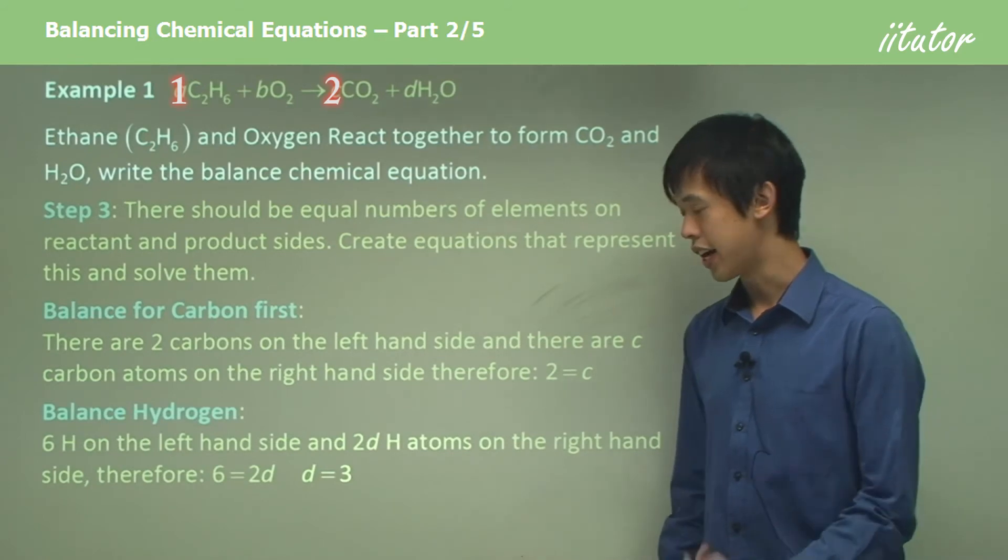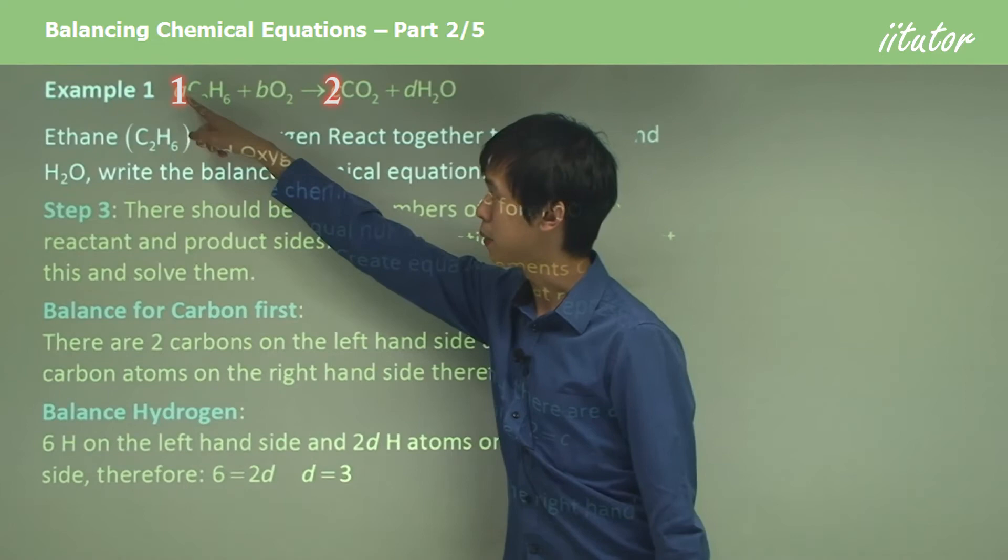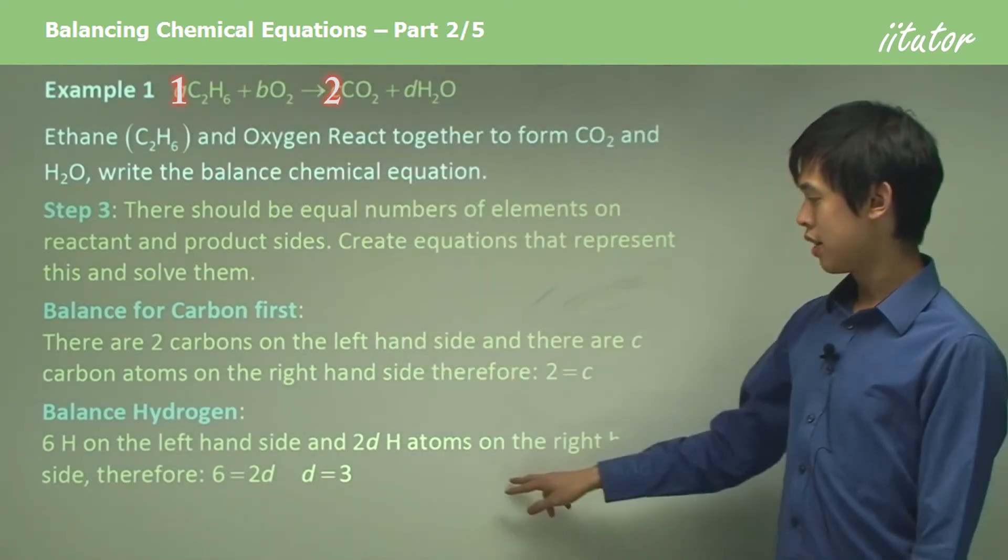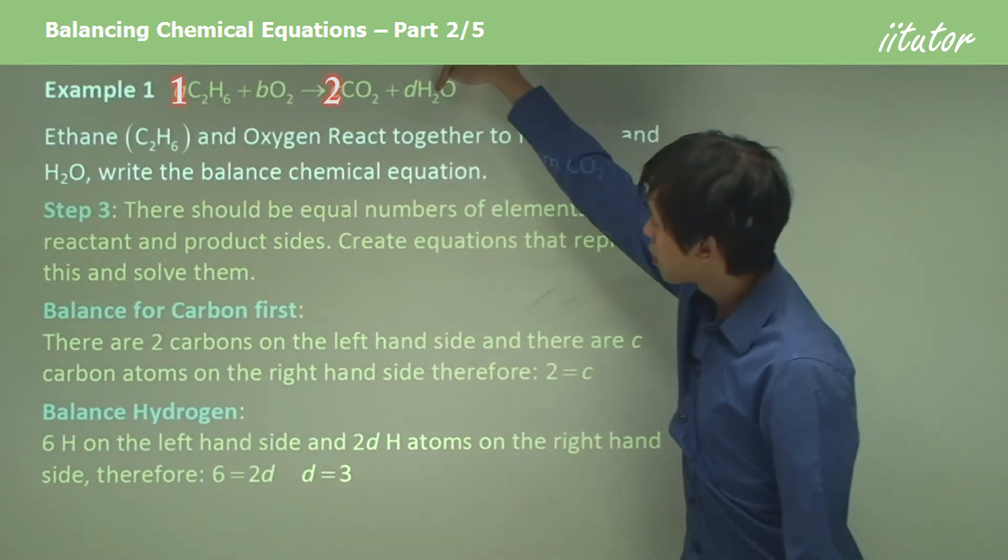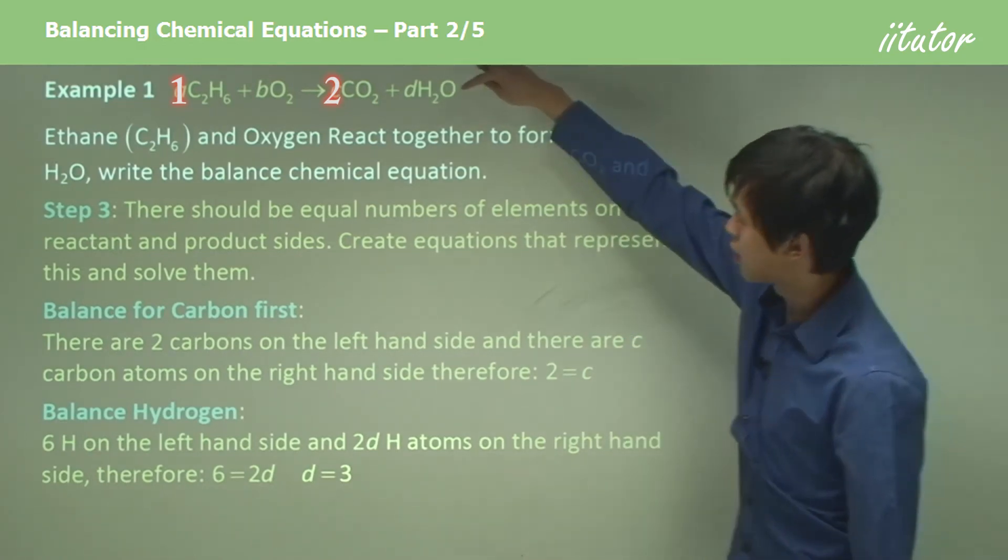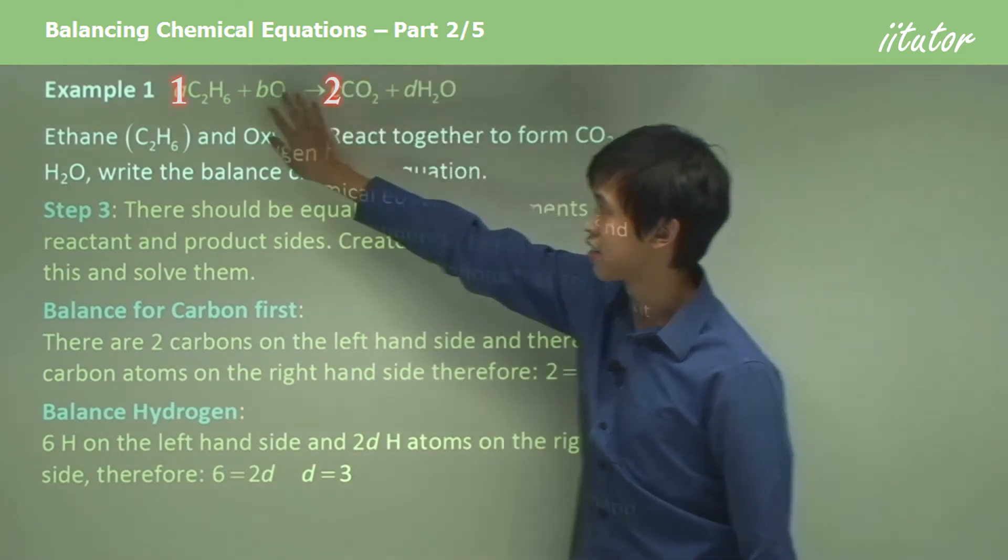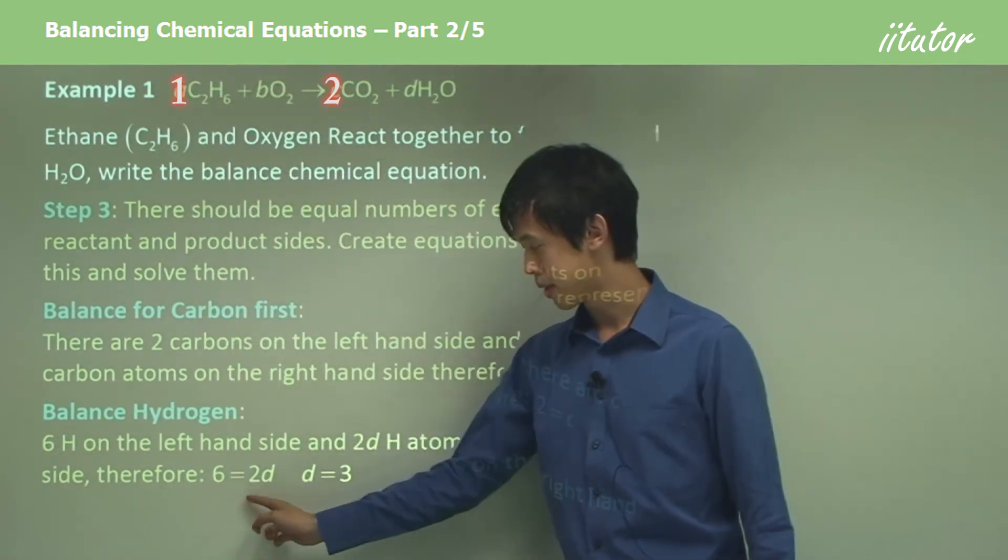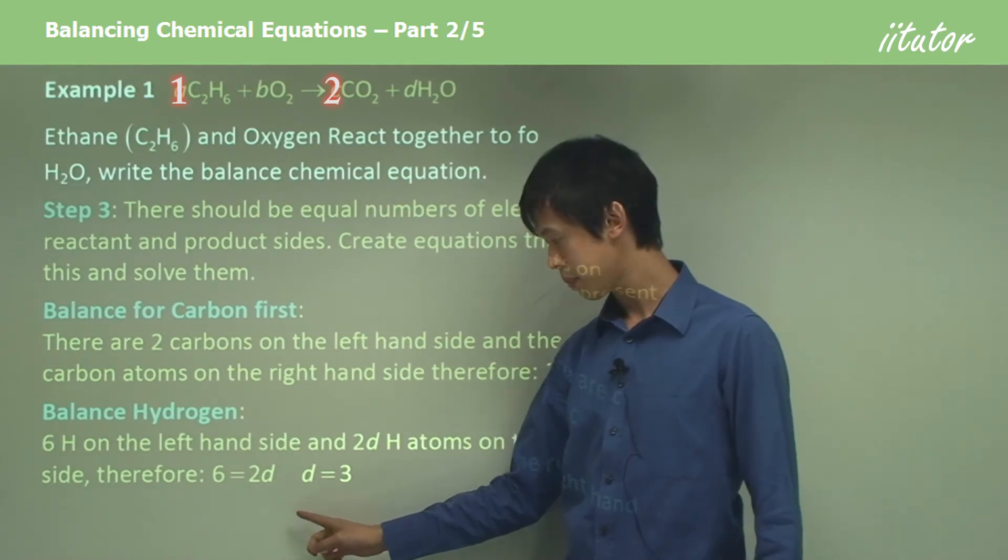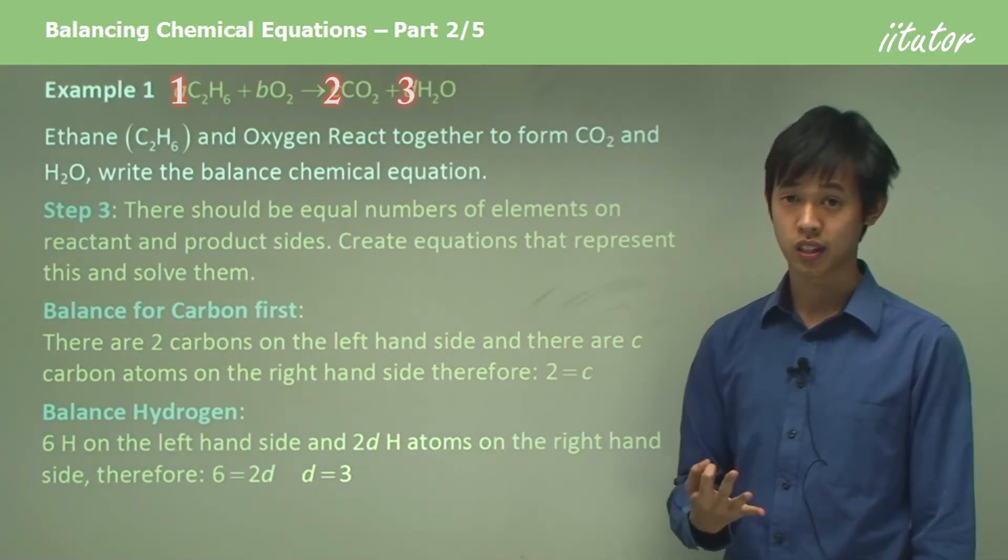We balance hydrogen next. There are six H's on the right hand side, because remember A is 1. So 1 times 6 is 6. And there are 2 times D H atoms on the right hand side. So there are 2 times D of these H's on this side. There are 6 on this side. So we write that down as 6 must equal 2D. Now if you rearrange that, D equals 3. Fairly self-explanatory.